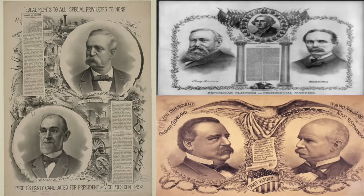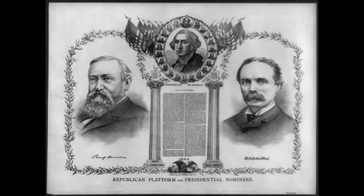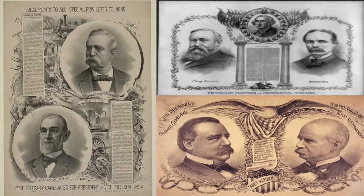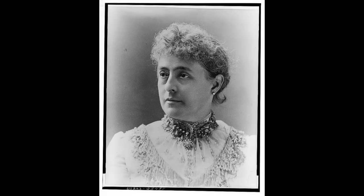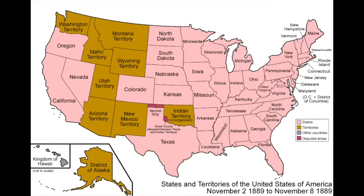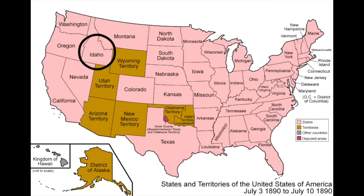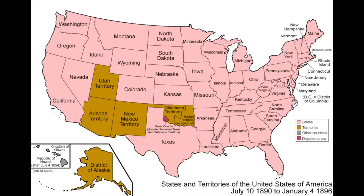Just like the last presidential election, debate over tariffs dominated the campaigns. Harrison defended his support of the McKinley tariff, while Cleveland continued to argue for tariff reductions. The campaigns all stopped, though, after Harrison's wife, First Lady Caroline Harrison, passed away in October from tuberculosis. Since the last election, six new states have been admitted to the Union: North Dakota, South Dakota, Montana, Washington, Idaho, and Wyoming, so they all now had to participate.